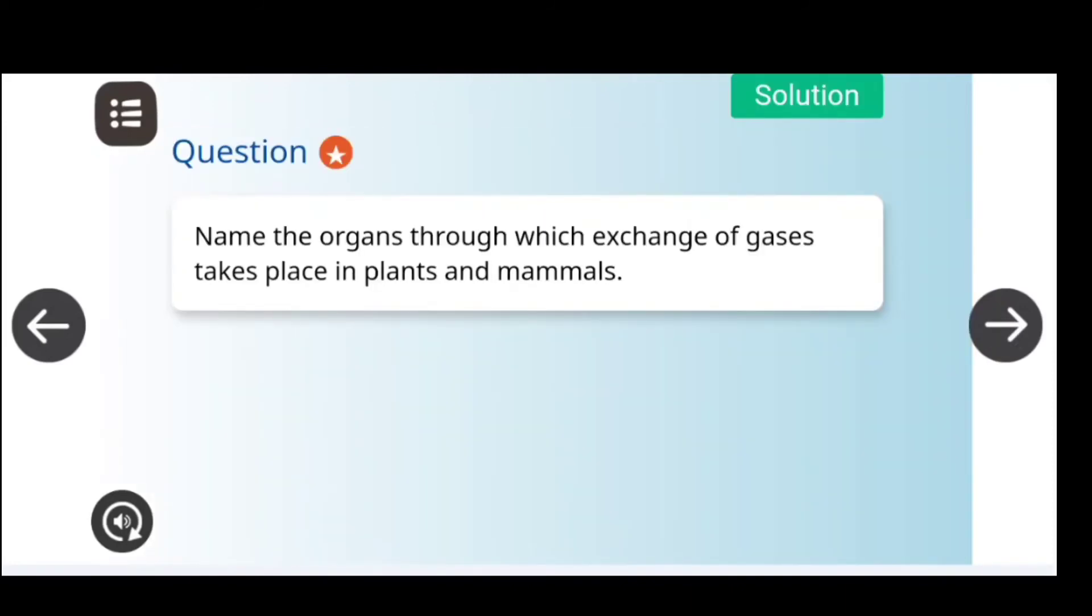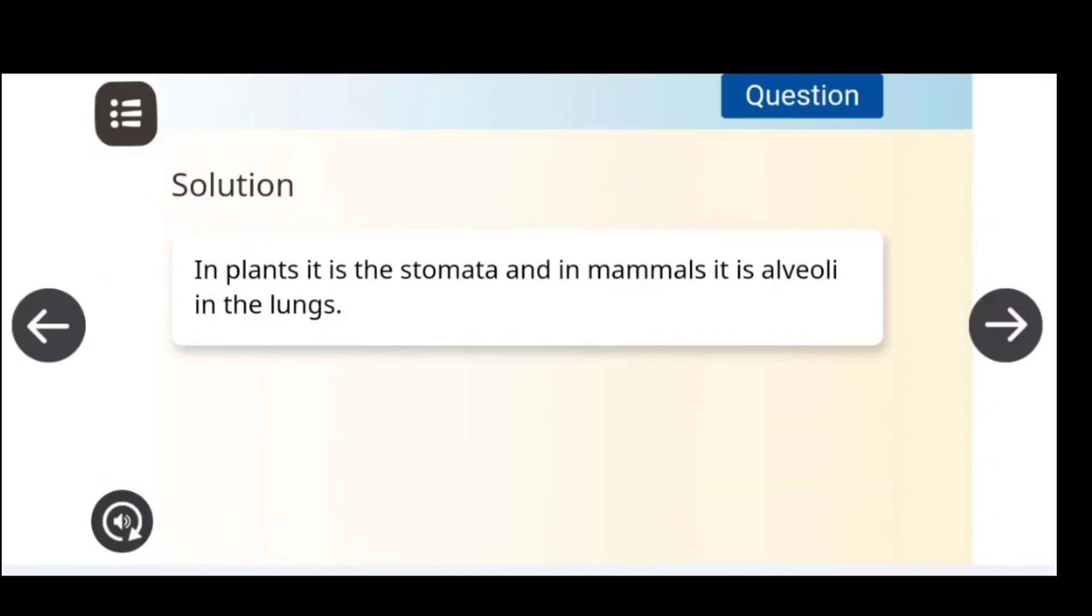Next question: Name the organ through which the exchange of gases takes place in plants and mammals. In plants, the stomata, and in mammals, it is alveoli in the lungs.